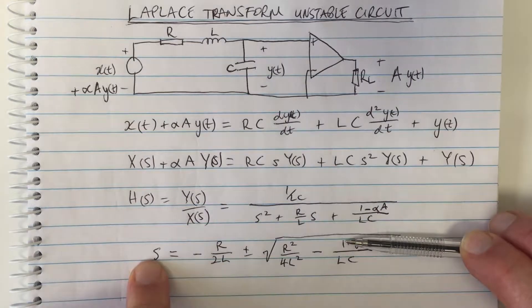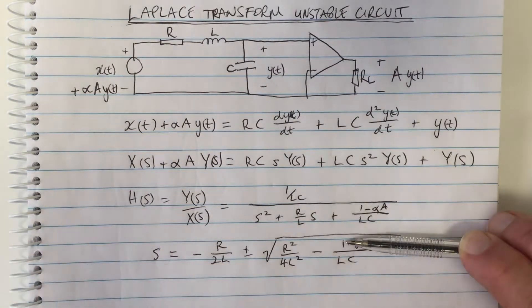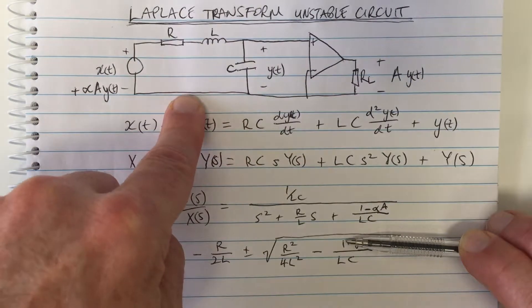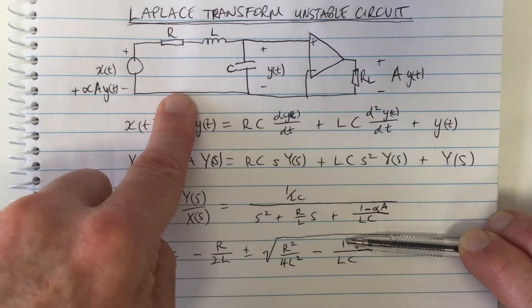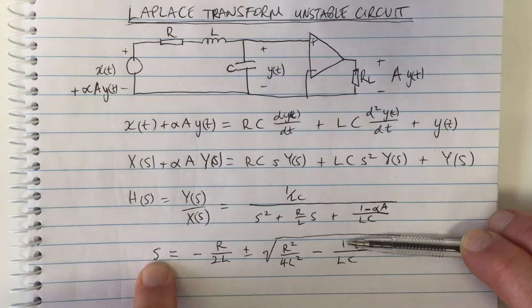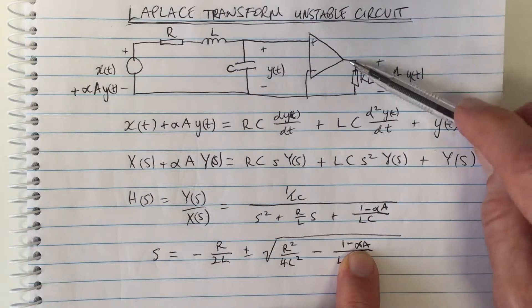This square root was always going to be less than this value here, so always the poles would be negative. That means always stable, and it means the j omega axis would be in the region of convergence because it's a causal system. Negative poles means stable system.